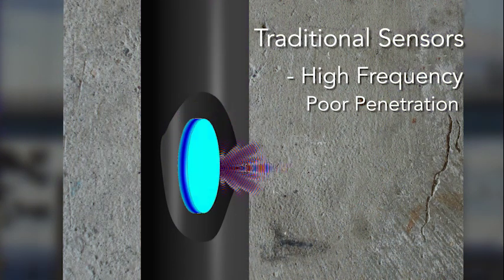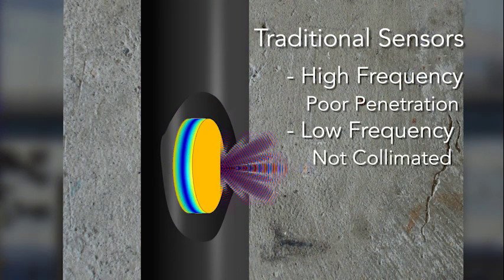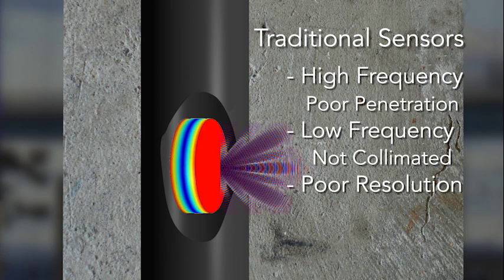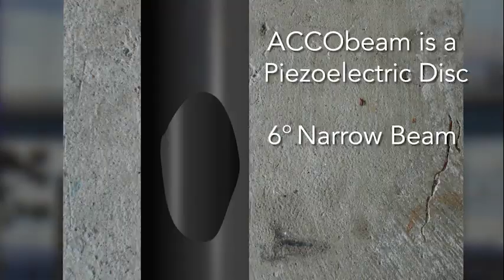Before this device, acoustic imaging devices were either high frequency, so they couldn't image more than a few millimeters in concrete, or low frequency but not collimated, which means that the beam would spread so widely that it would lead to poor resolution. ACCO beam is bridging the gap between the two.